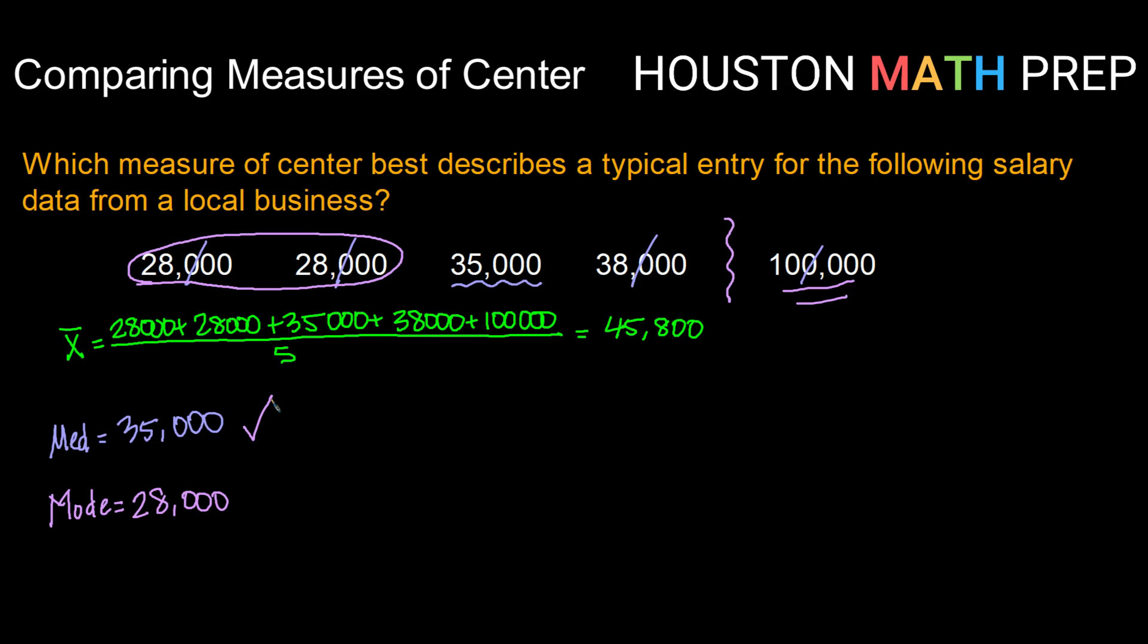Thinking about our mode, mode is almost never the best measure of center. In this case, our mode happens to be our smallest data value, so probably not the best measure of a central or typical value. So because we did have a quite large value up top pulling the mean up, in this case the median was the best measure of center.